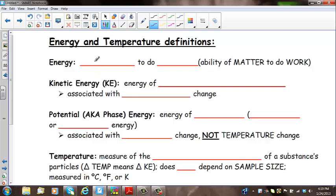So first, what is energy? Energy is the capacity to do work, or the ability of matter to do work. So there's our first vocabulary term.